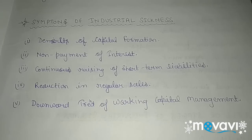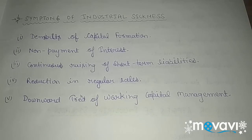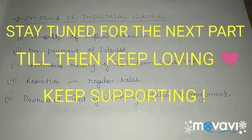Next is reduction in regular sales — obviously, when any industrial unit's regular sales start declining — from 100 to 80, to 50, to 30 — looking at this situation we can also say that sickness is prevailing in that industrial unit. Next is downward trend of working capital management — if any industrial unit's working capital management shows a downward trend, or working capital requirements are not being met, then looking at this situation we can identify if sickness is prevailing in that industrial unit.